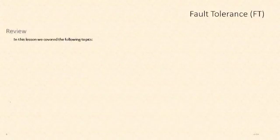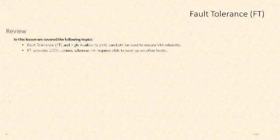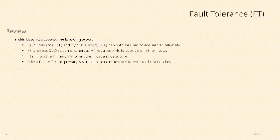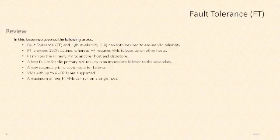In review, fault tolerance is one of our reliability features with vSphere and it goes hand in hand with high availability. High availability involves downtime — it requires virtual machines to boot up on other hosts. Fault tolerance keeps a secondary virtual machine and a secondary copy of the virtual machine's files, so in a host failure it's an immediate failover to the secondary without downtime, and a new secondary will be respawned to re-protect the primary VM. As of vSphere 6, we can support up to four virtual CPUs on fault tolerance, but we still have a limit of four fault-tolerant virtual machines running on a single host.